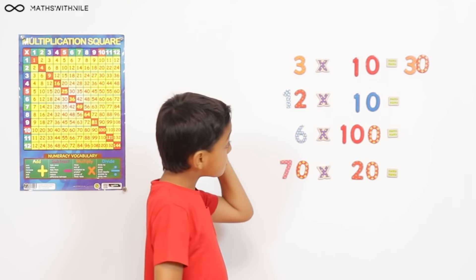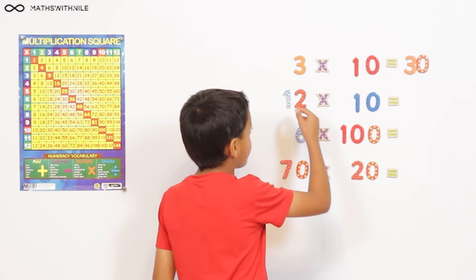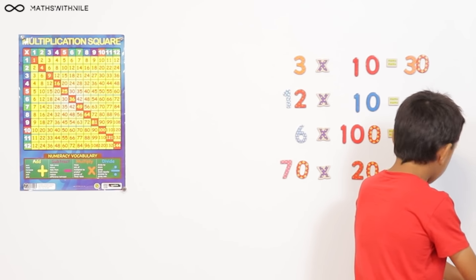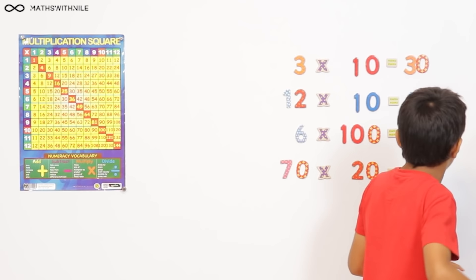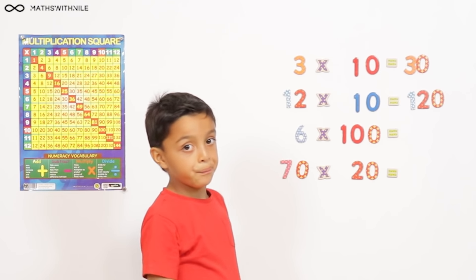Very good, can you do the second one? 12 times 10, so we're doing the same thing just with 12. We'll get 12 and then add a zero to it, so the answer is 120. Very good.